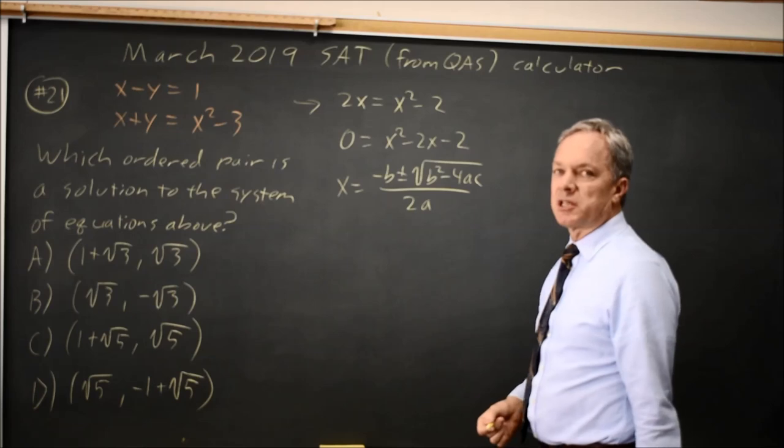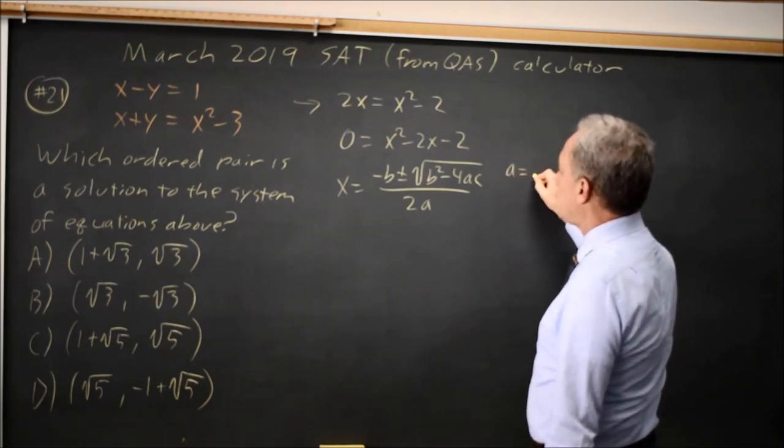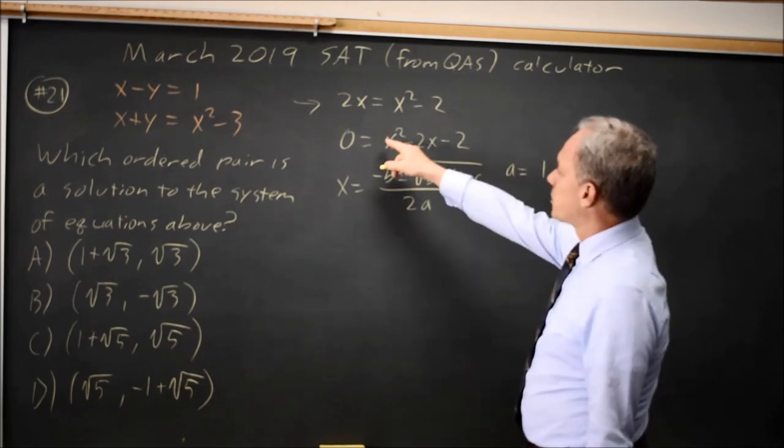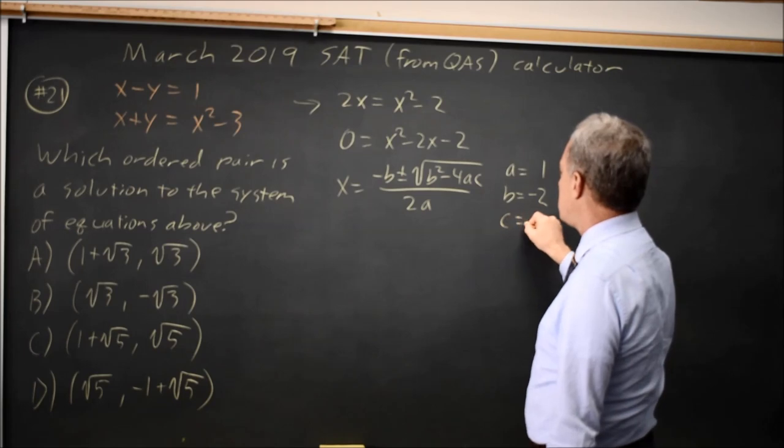This is not the most efficient method, but it's a method we know will work several times during the course of our SAT. So we have a equals positive 1 because a is the x squared coefficient. b equals negative 2, c equals negative 2.